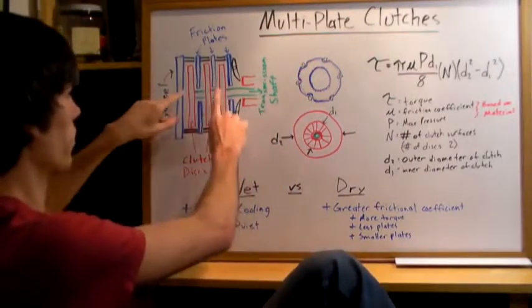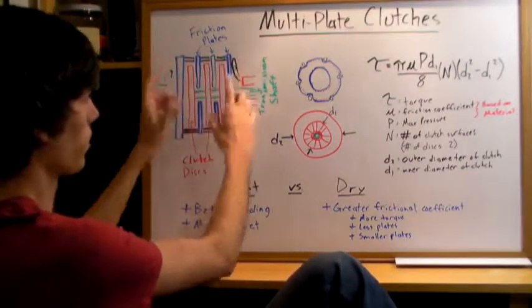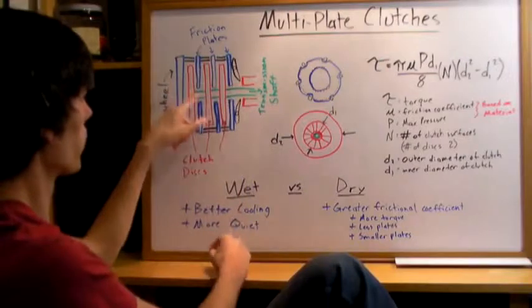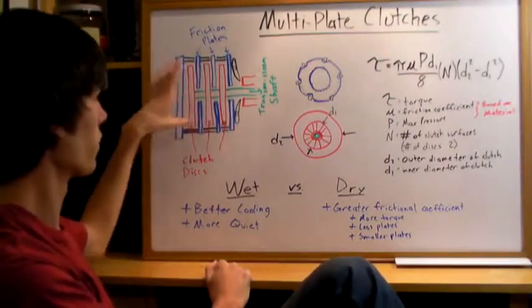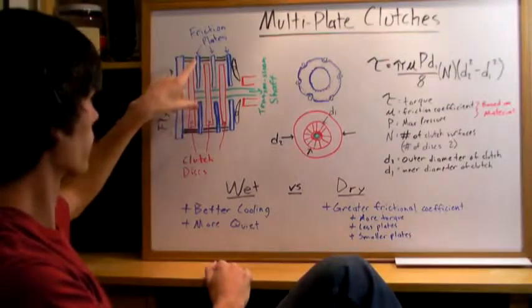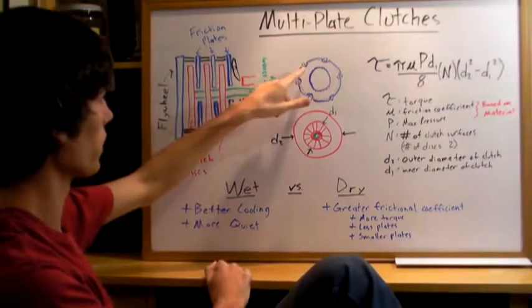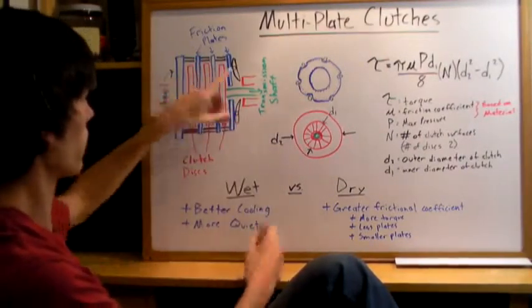Another thing to note is that these friction plates and these clutch discs can all slide within this clutch pack. The clutch discs are on a spline on this transmission shaft, and so they can slide along it, and then these friction plates are just moving freely, that rod is holding them in place, but they can slide inside here.